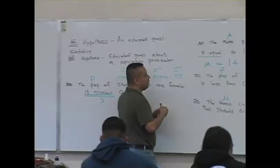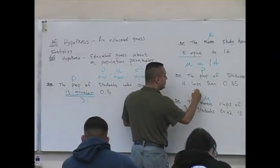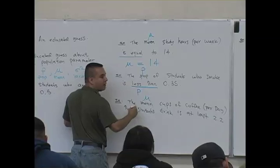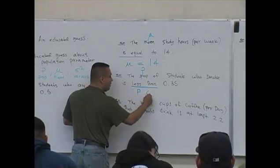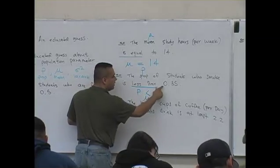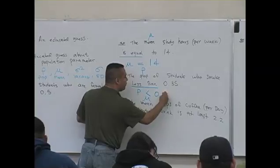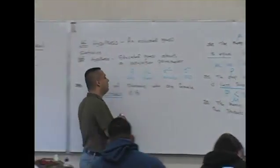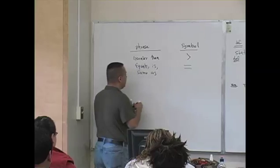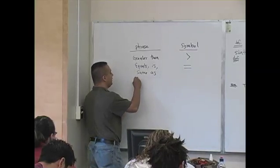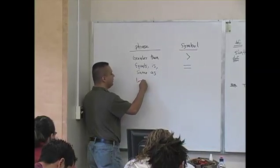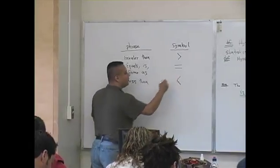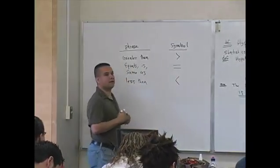For 'the proportion of students who smoke is less than 0.35,' the phrase 'less than' is represented by the < symbol, so it becomes p < 0.35.